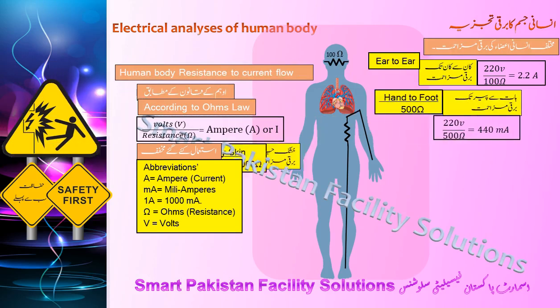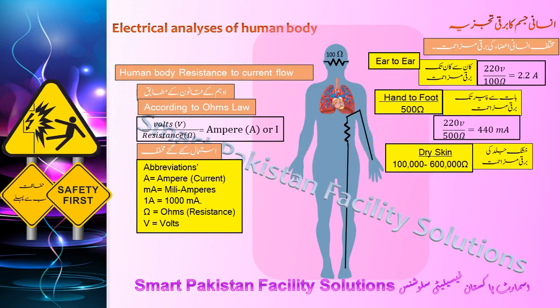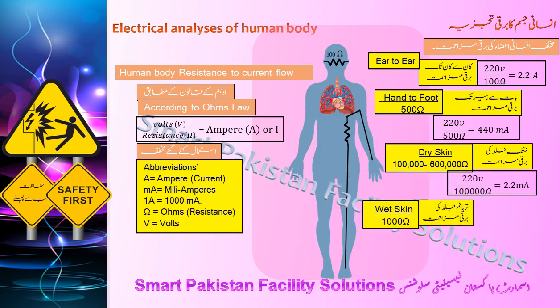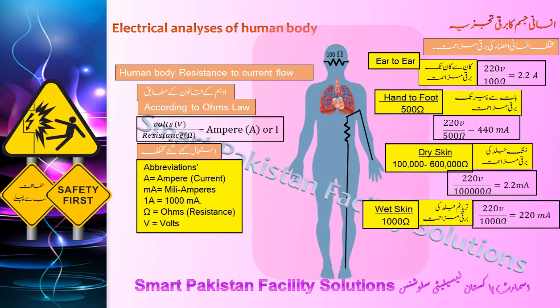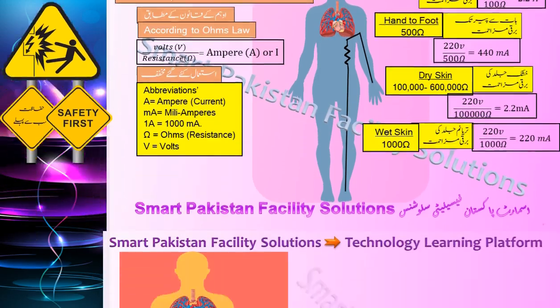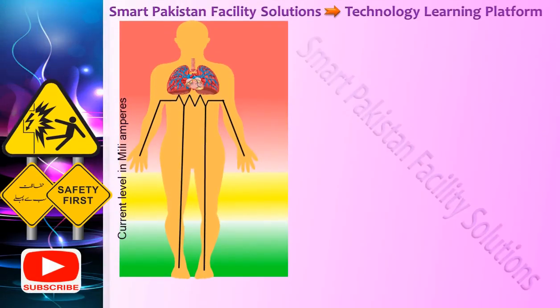Head-to-foot, 500 ohms, can pass 440 milliamps. Dry skin passes 2.2 milliamps. Wet skin causes 220 milliamps to pass. Now look at the impact of current when passed through the human body.